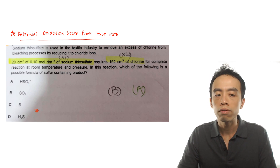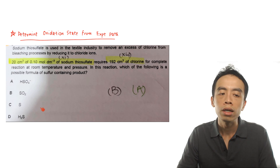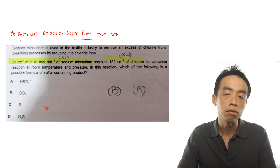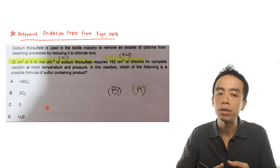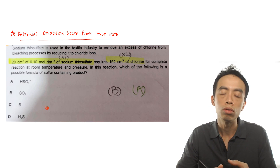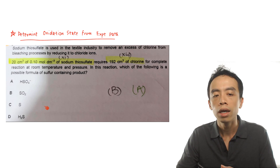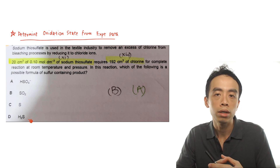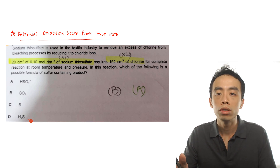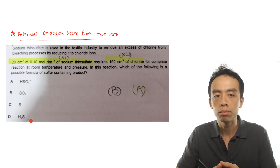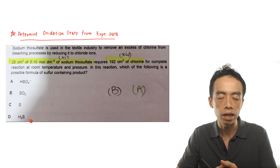These four options differ in the oxidation state of sulfur. We need to determine the final oxidation state of sulfur and from there deduce which option is a reasonable answer. In general, there are four steps to determine the oxidation state of the unknown, so let's take a look at those four steps.